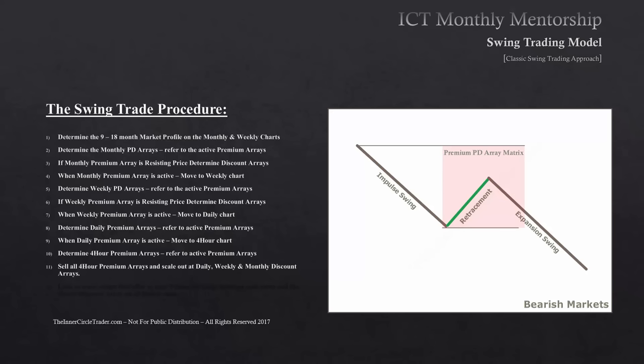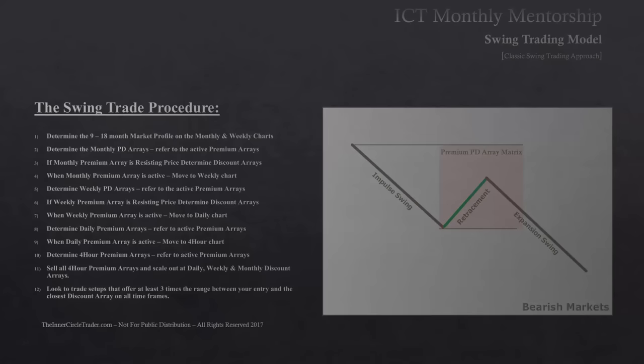As you sell short, look to take profits at the daily, weekly, and monthly discount arrays — all the bullish ideas that would support price. As you reach them with price moving in your favor, scale out. The more you get to the monthly and weekly discount range, the less likely price will continue going lower, so you want to be at your smallest portion at that time. Look for trade setups that offer at least three — preferably five — times the range between your entry and the closest discount array.